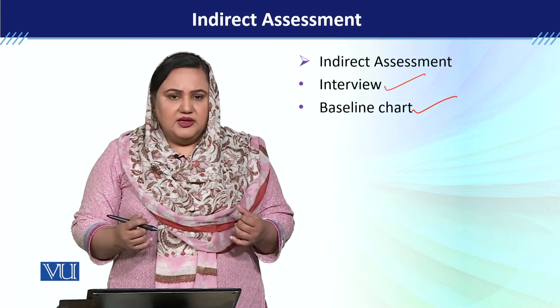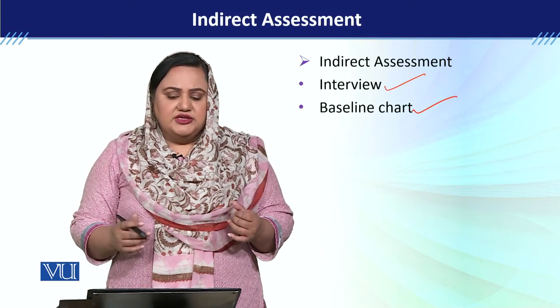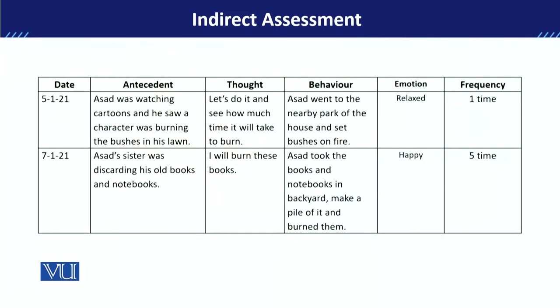Along with this, we will take a baseline chart. As we have mentioned before, in the baseline chart we identify the ABC: A is the antecedent event, B is the belief system or the behavior, and C is the consequences.